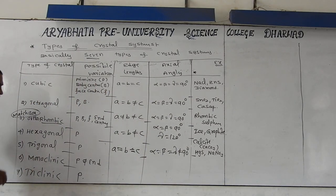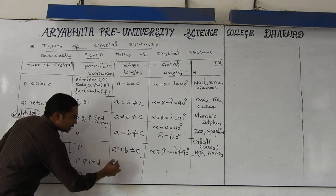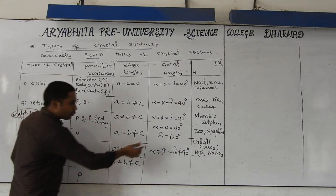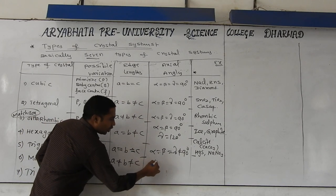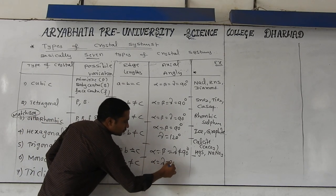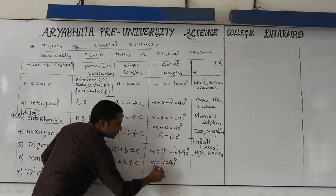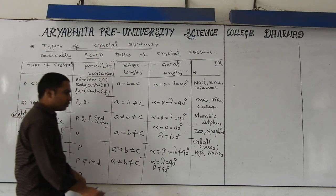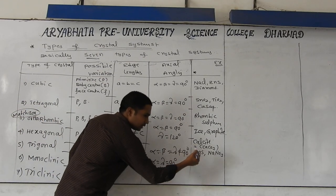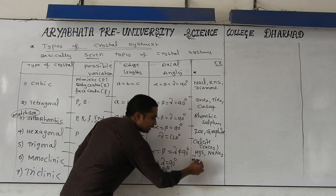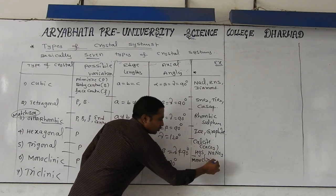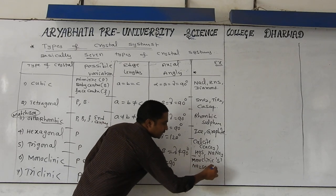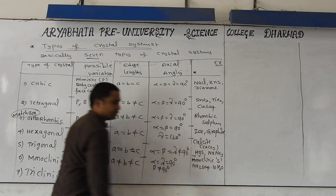Under monoclinic, the relation is a ≠ b ≠ c. For angles: alpha = gamma = 90 degrees, but beta ≠ 90 degrees. Examples for monoclinic: monoclinic sulfur — an allotropic form of sulfur — as well as sodium sulfate crystalline, Na₂SO₄·10H₂O.